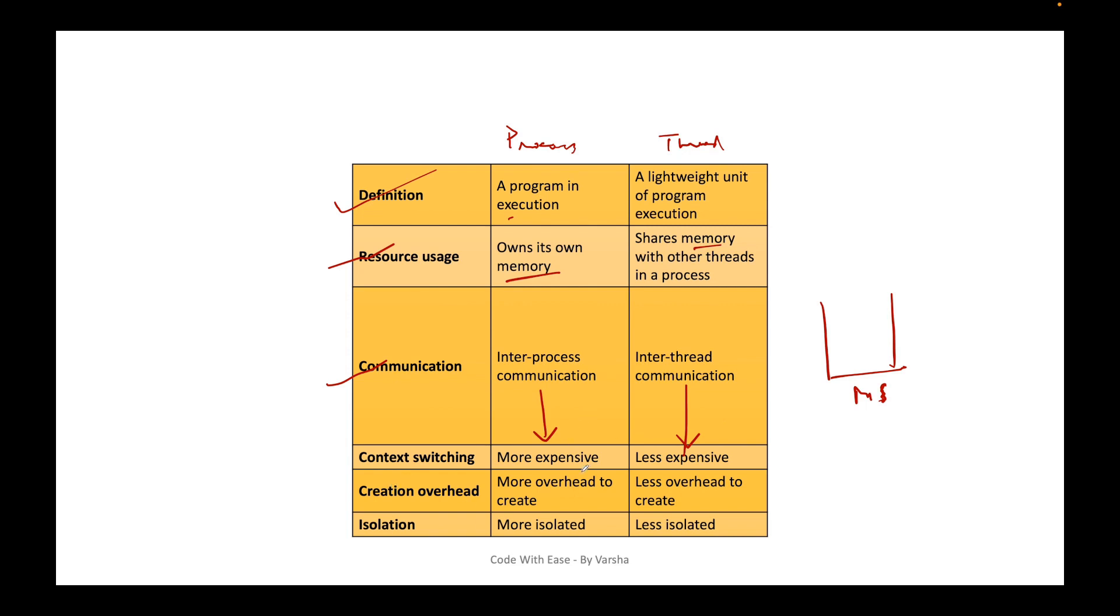And of course, if something is more expensive and requires more resources, it will have more overhead to create. You might have seen sometimes the system hangs when you try to launch too many applications. Why? Because each of them is launched as a different process, creating more overhead. But threads essentially came into the picture only to reduce the overhead, to make the systems fast, to improve performance. So obviously their overhead will be less.